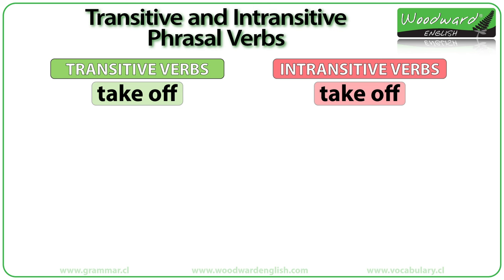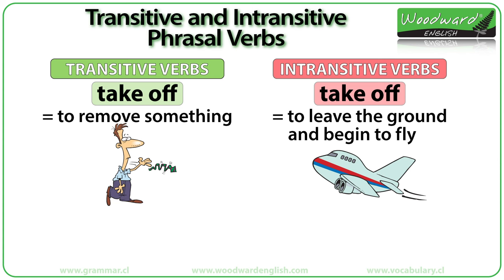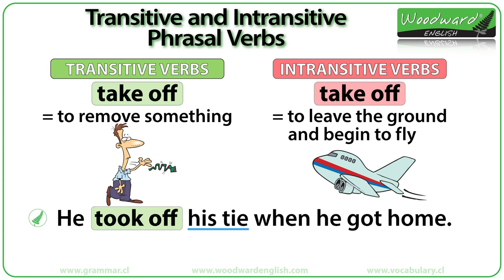Let's look at the following example. When "take off" is transitive, it means to remove something. When "take off" is intransitive, it means to leave the ground and begin to fly. "He took off his tie when he got home." Here, "took off" is transitive, so it needs an object — in this case, "his tie." Since there is an object after "take off," we know the meaning is to remove something.